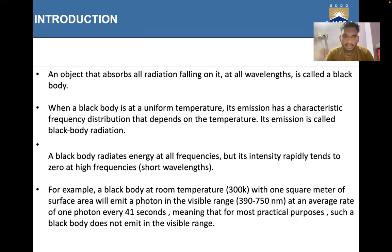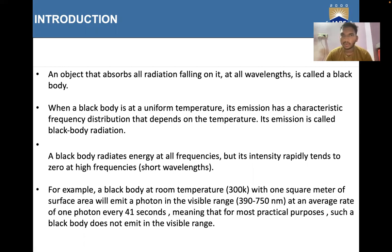For example, a black body at room temperature — 300 Kelvin — with one square meter of surface area will emit a photon in the visible range (390 to 750 nanometers) at an average rate of one photon every 41 seconds, meaning that for most practical purposes such a black body does not emit in the visible range.